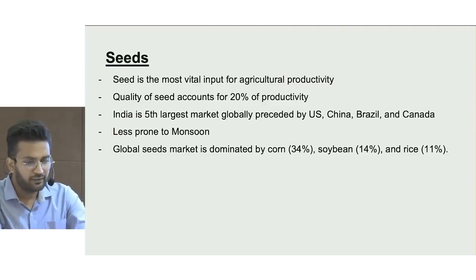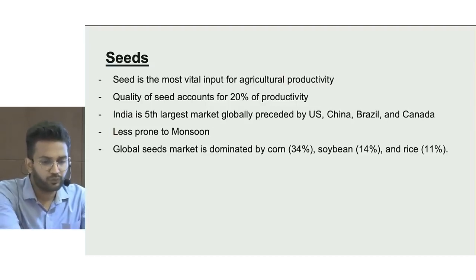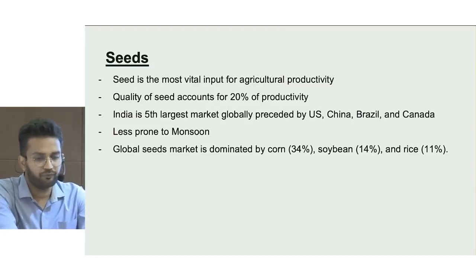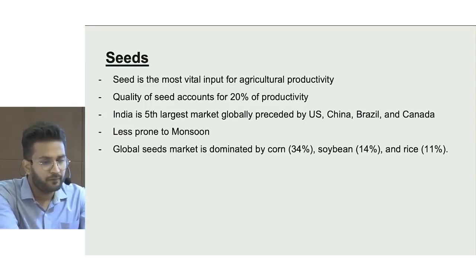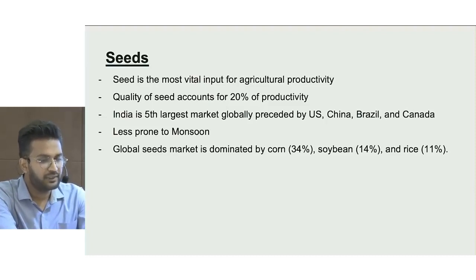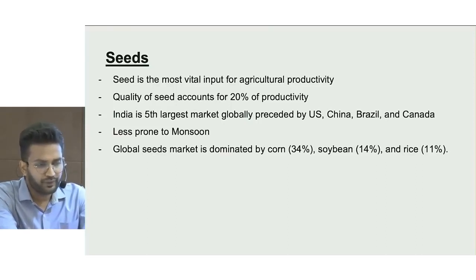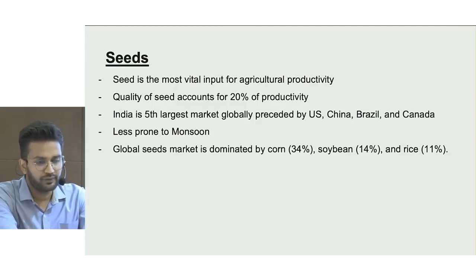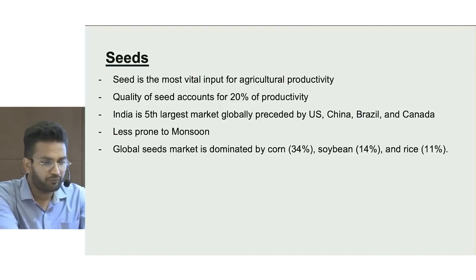Seed is a highly seasonal business with most revenues coming in Q1. The buying of seeds happens well before the monsoon starts, so seeds are the least prone to monsoon risk among the three segments. Most buying happens before June. Corn, soybean and rice dominate globally, accounting for around 60% of the global seeds market.